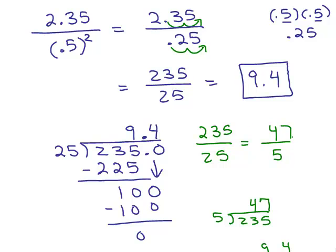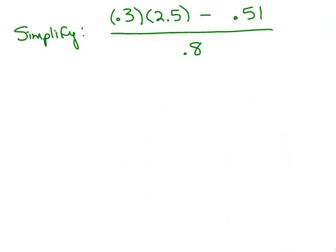It's really up to you whether you like that idea of reducing first. It's just an option. You don't have to worry about it. You could just go ahead and do 25 into 235. Here's a problem. It has multiplication, subtraction, and division in it. Let's try this one.